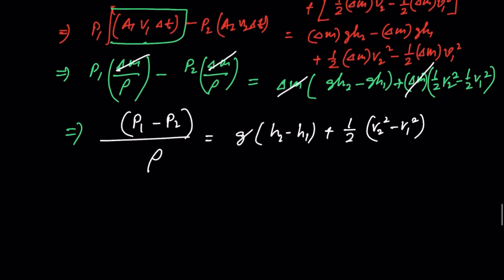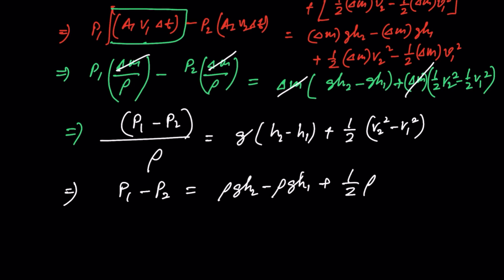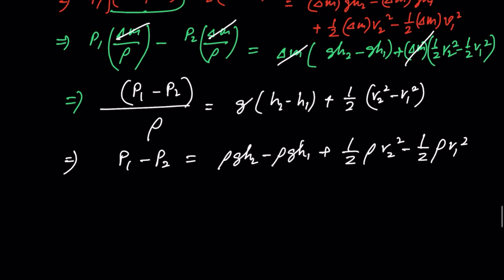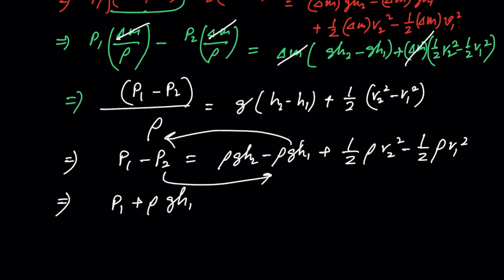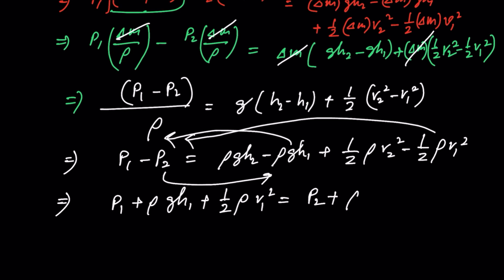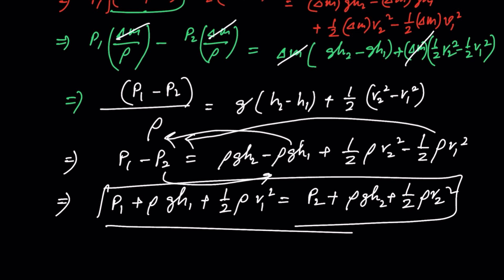Rearranging this equation: P1 + rho·g·H1 + half·rho·V1² = P2 + rho·g·H2 + half·rho·V2². That is Bernoulli's theorem. In the next class, I will be discussing the applications of Bernoulli's theorem.